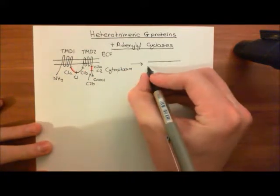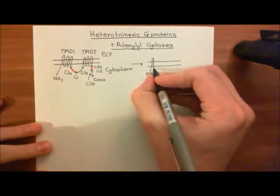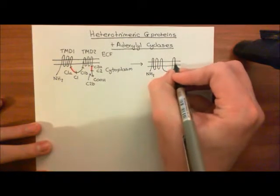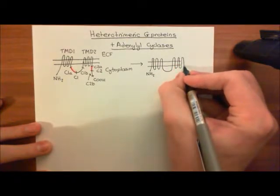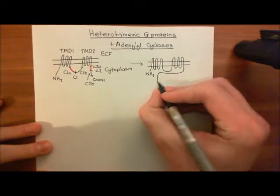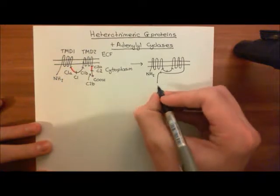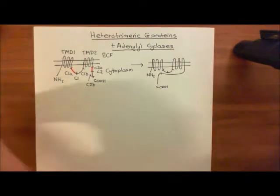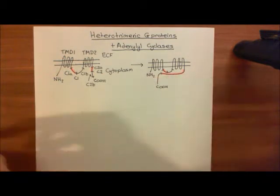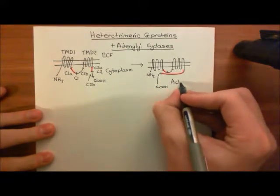Let me now draw the active version. We have the amino terminus, then the six membrane-spanning alpha-helices of TMD1, the C1 loop, another six membrane-spanning alpha-helices making up TMD2, and then the C2 domain. C2A here dimerizes with C1A to create the active enzyme — so you've now got one active adenylyl cyclase.